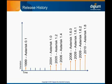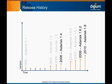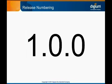At this time, all major releases of Asterisk except the 1.4, 1.6.2, and 1.8 families are considered end of life. If you're currently running a version of Asterisk that predates one of these families, we urge you to consider upgrading immediately. Let's take a closer look at Asterisk version numbering.